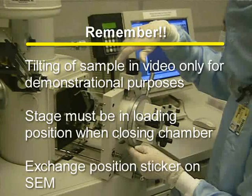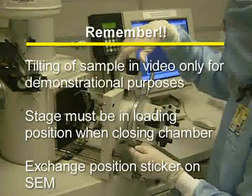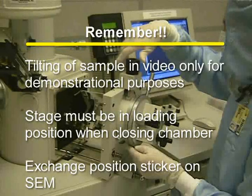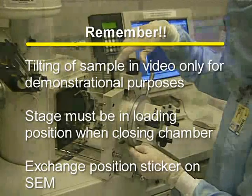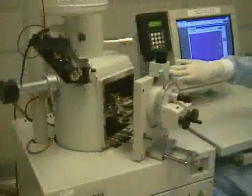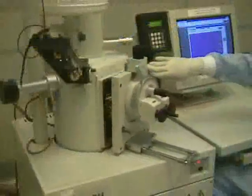Remember, the exchange position sticker on the right side of the SCN has the venting positions listed on it. After loading a sample, we are ready to close the chamber.